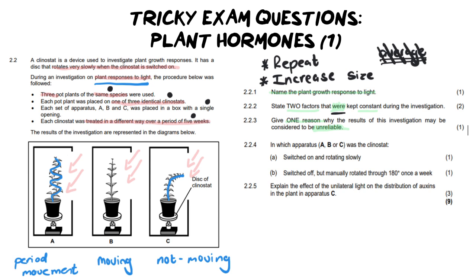Moving on: in which apparatus A, B, or C was the clinostat switched on and rotating slowly? We've already established that it's definitely B — even distribution of auxins means it grows straight. Then the tricky question: which apparatus was switched off but manually rotated through 180 degrees once a week? That's what gives us the squiggle, and that's apparatus A — because once a week it would grow towards the light, then you'd swivel it away, producing that bending pattern.